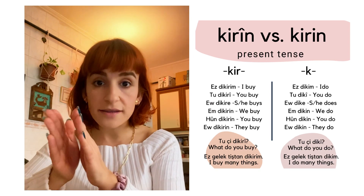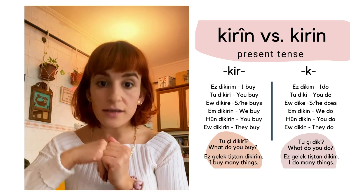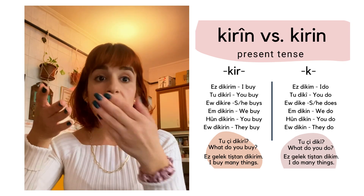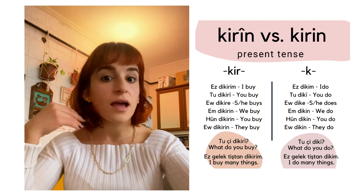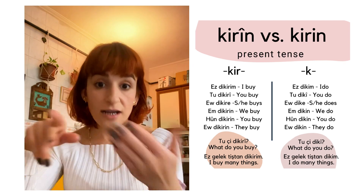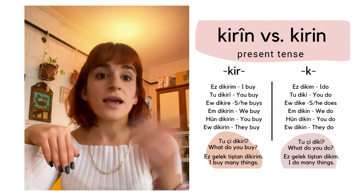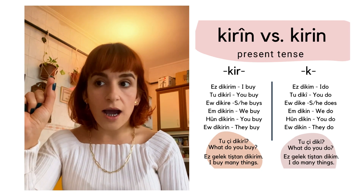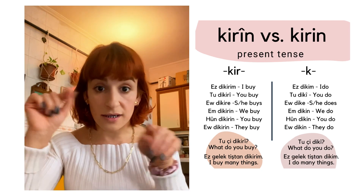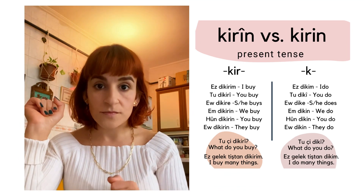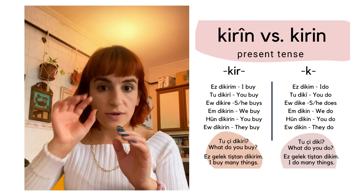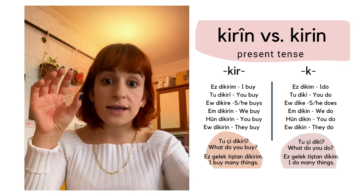Let's compare the present forms first. For 'kareen' (to buy), the present stem is 'kareen.' We say: 'asthe kareem' (I am buying), 'to the karee' (you are buying), and so on. But for 'karen' (to do), the present stem is just 'ka.' So we say 'asthe kam' (I do), 'to the key' (you do), and 'ew deka' (he/she does).